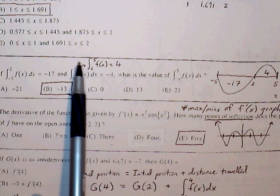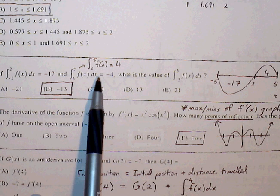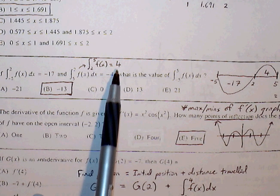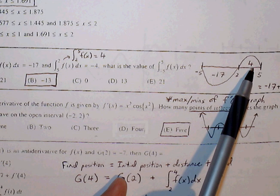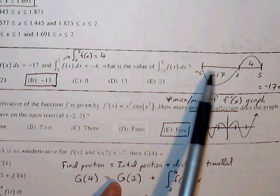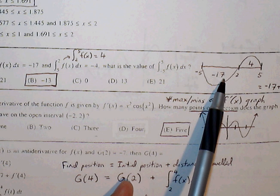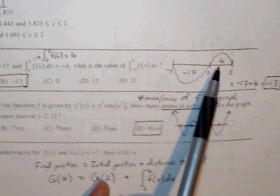If I pull a negative in front, then that's the same thing as changing this negative 4 to a positive 4. So the definite integral from 2 to 5 is a positive 4. And so therefore, the definite integral from negative 5 to 5 will just be negative 17 plus 4, which is negative 13.